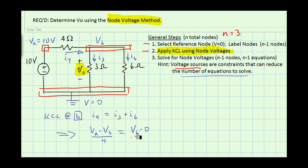And that's going to equal I3. I3 is the voltage drop across the 3 ohm resistor, which is VB minus 0 over 3, and I6 is VB minus 0 over 6. Now VA, of course, we know is 10 volts. We already know that value, so we only have one unknown in our equations and that's all we need to solve.